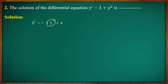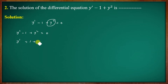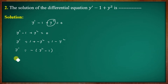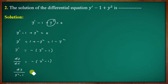For part B of the question: y' - 1 + y² = 0. So y' = 1 + y². Rearranging: dy/dx = minus(y² - 1). Separating variables: dy/(y² - 1) = -dx. This is a separable differential equation.